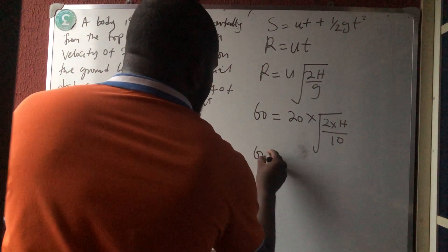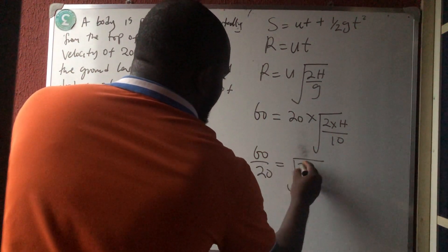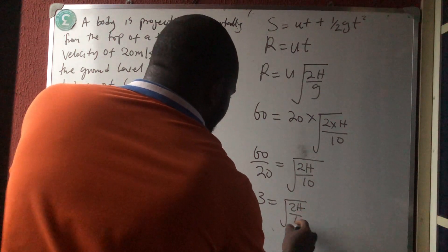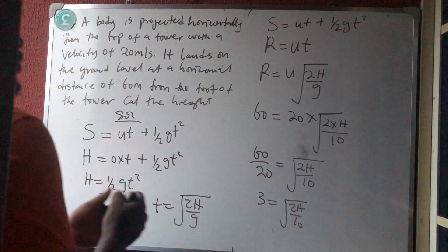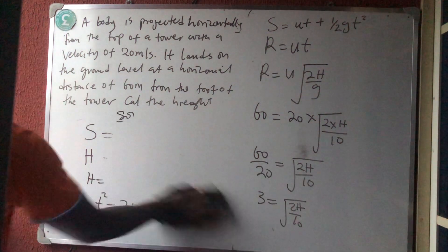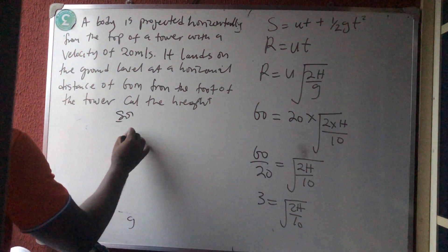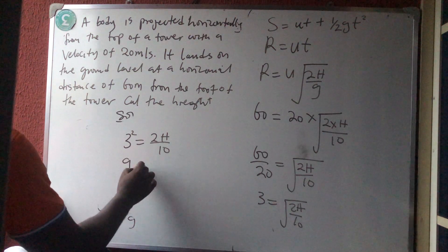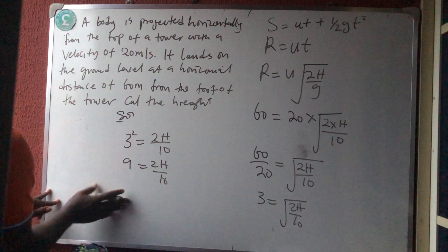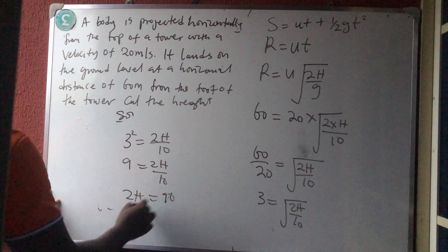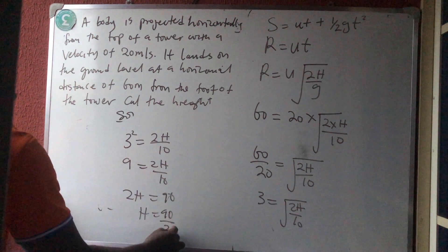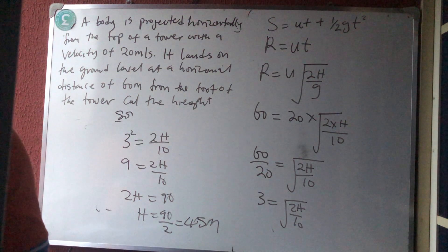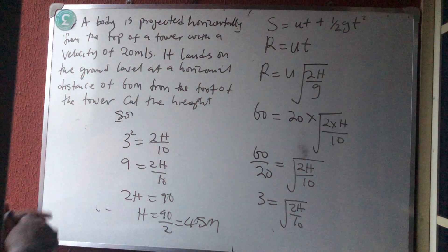Dividing both sides by 20: 3 equals the square root of 2H over 10. Squaring both sides: 9 equals 2H over 10. Cross-multiplying: 2H equals 90, so H equals 45 meters. That is the height of the tower.